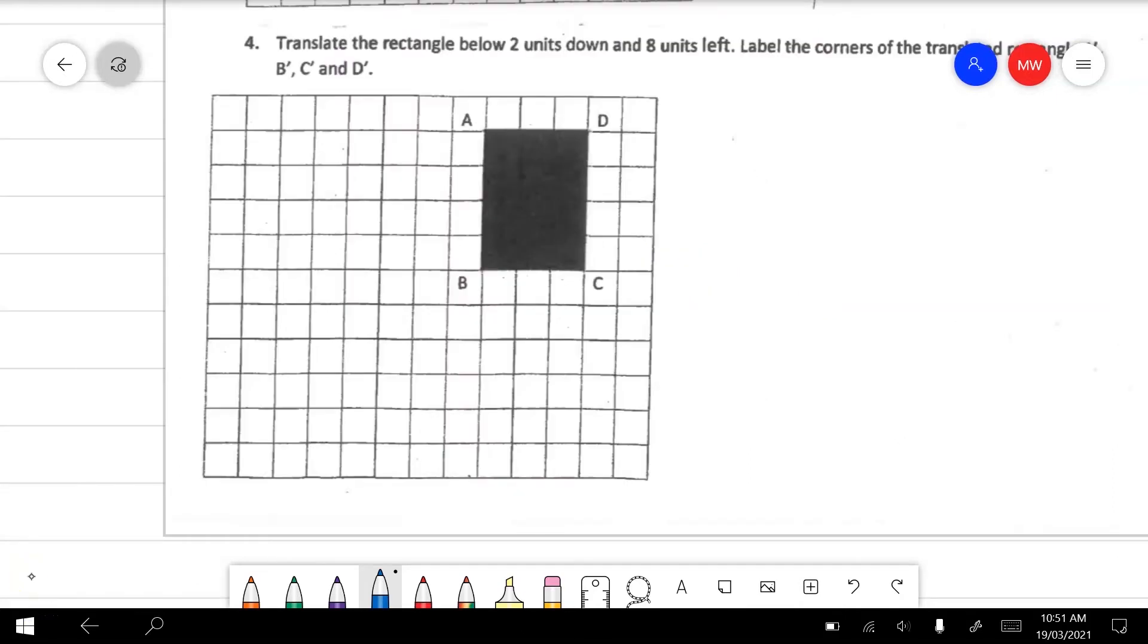In question 4, instead of us describing the translation, it's asking us to translate the rectangle below. And so we're going to move it two units down and eight units left. The easiest way to do this is just to pick one point. And if we move that point, the rest of the points will move with the shape. So we'll go two down. So one, two. And then it will go eight units left.